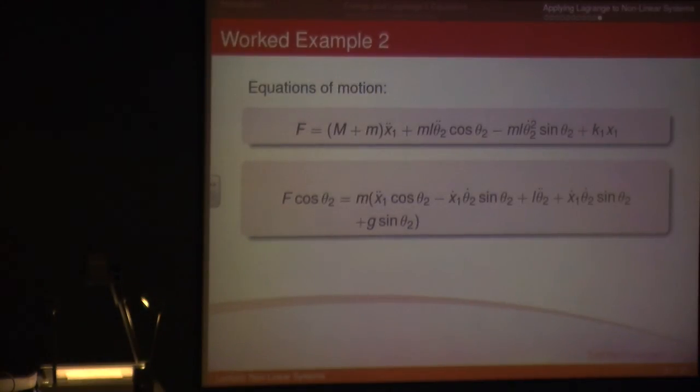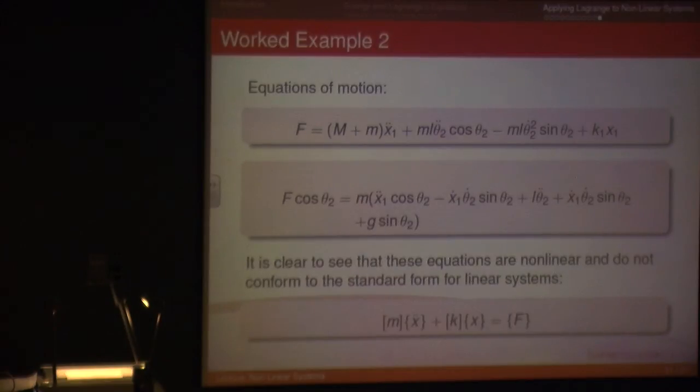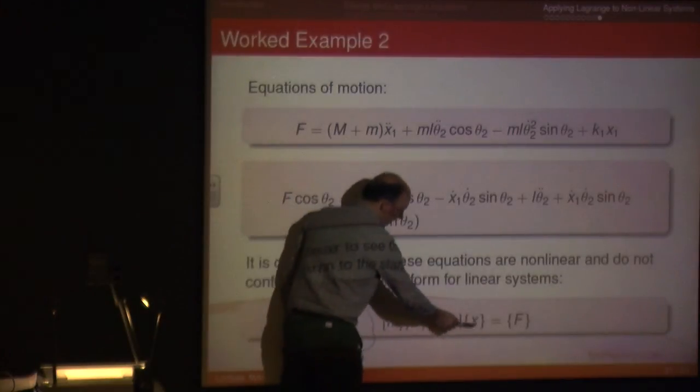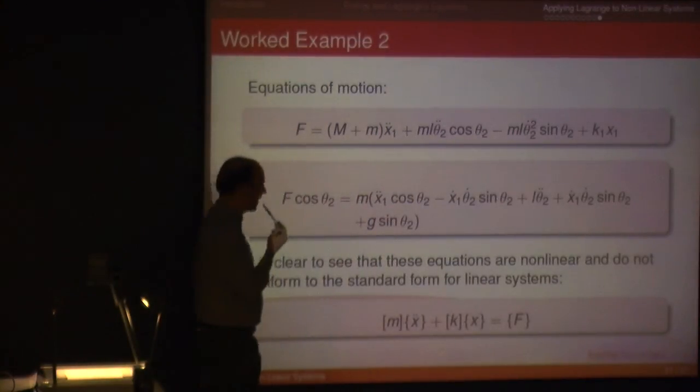So that just shows you how you can find the non-linear equations of motion of the mass and the bob, and you cannot put them in matrix form, which would be something like that. You can't group the masses and the springs together to give you this nice, clean equation of motion. That's all right. Thank you.